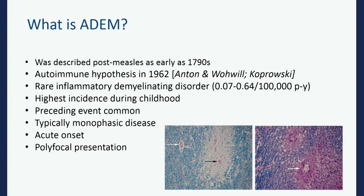Unfortunately, the very first patient described actually died of ADEM. So what is ADEM? ADEM has been recognized for several centuries and was described post-measles and after several infections. It was only in 1962 that there was an autoimmune hypothesis, which really ushered in a new era for ADEM treatment and understanding. All the epidemiology we have is really from children — we don't have very good adult ADEM data.